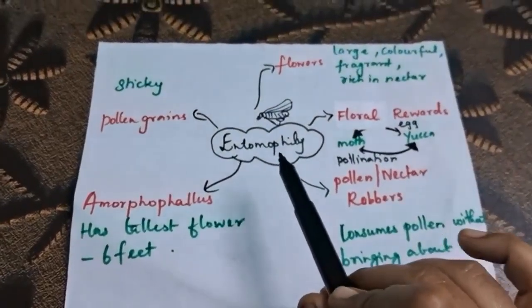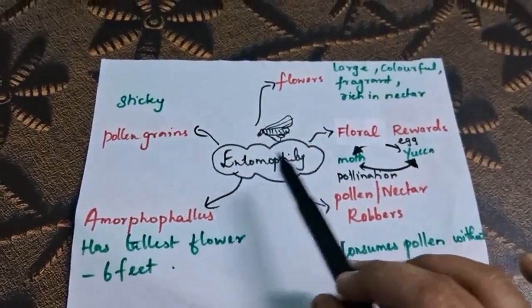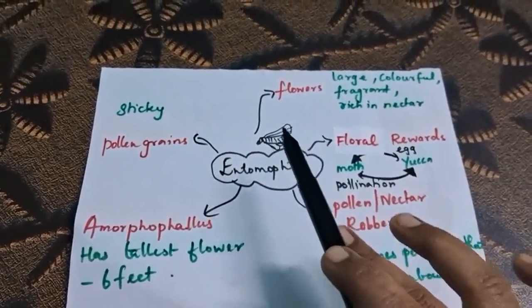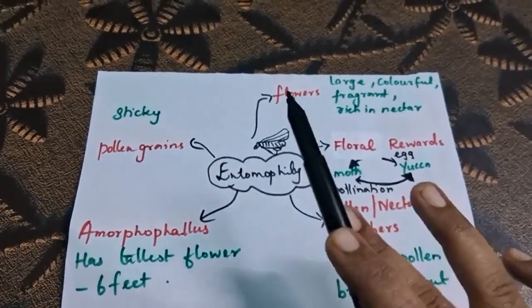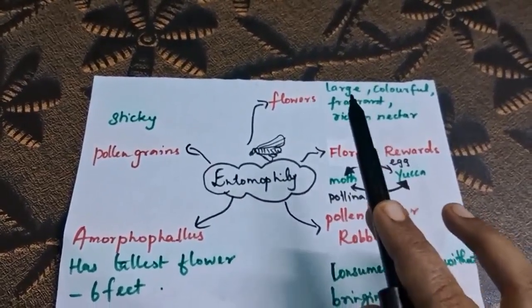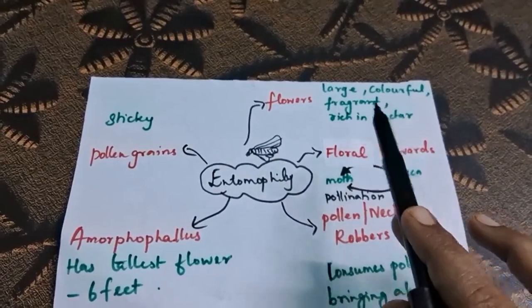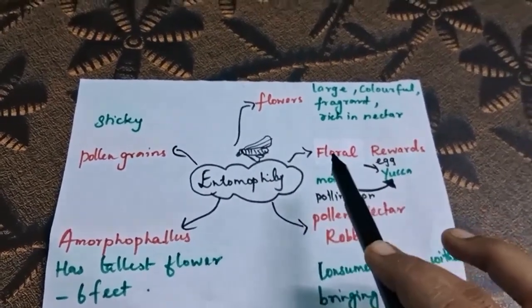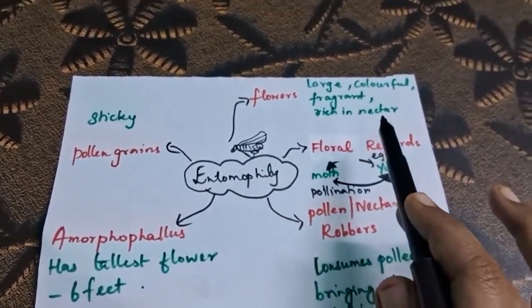Entomophily is pollination carried out by insects. Entomophilous flowers should be large in size, have attractive colors, release fragrance, and be rich in nectar.